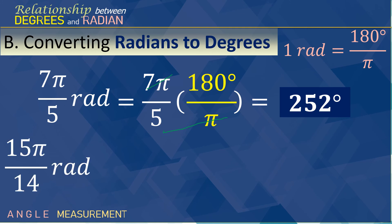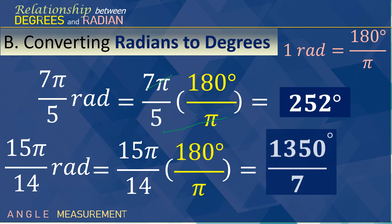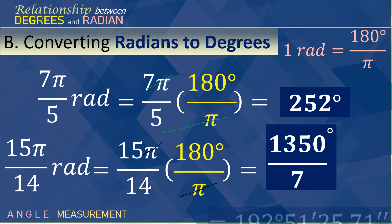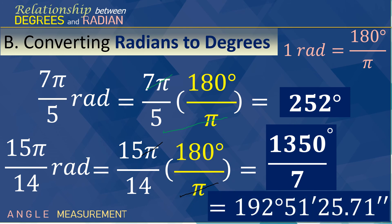Next, 15 pi over 14 radians. We multiply 15 pi over 14 to 180 degrees over pi. Cancelling out pi here. It will give us 1350 over 7 degrees. And that is actually fraction. Now, that is exactly equal in degrees, minutes, and seconds. 192 degrees, 51 minutes, and 25.71 seconds.